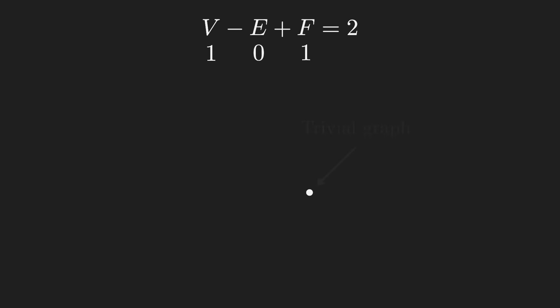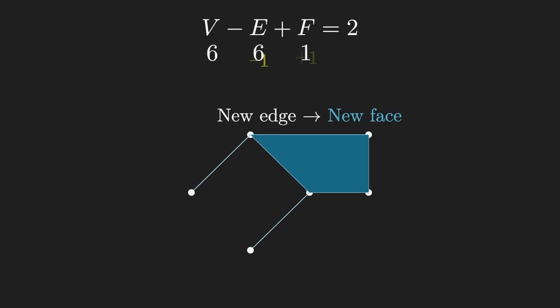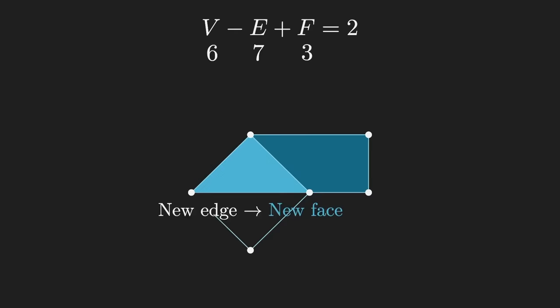Then, if you build up your graph one edge at a time, one thing that could happen is that for each new edge, you introduce a new vertex. So E goes up by 1, but V also goes up by 1, leaving the equation balanced. But if a new edge doesn't correspond to a new vertex, meaning it's connecting to a pre-existing vertex, that means that it's enclosed a new region of space. So E goes up by 1, but F also goes up by 1, which again leaves the equation balanced.